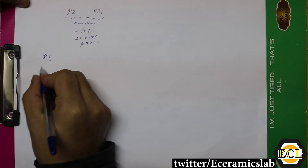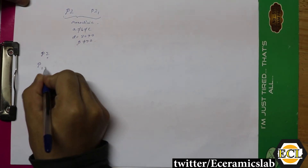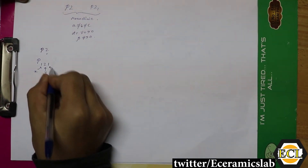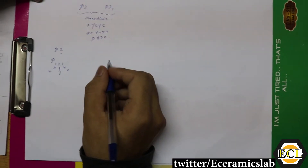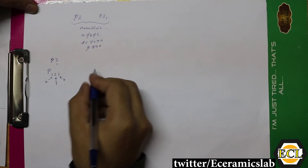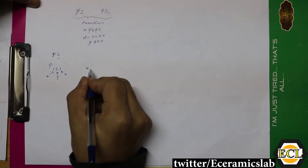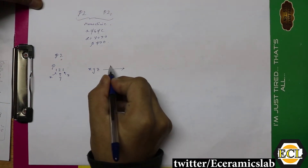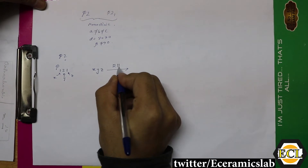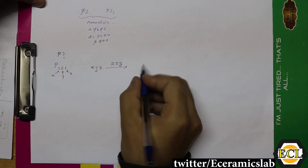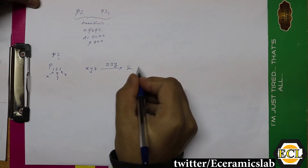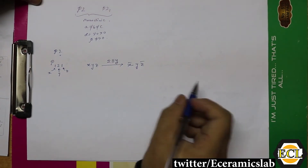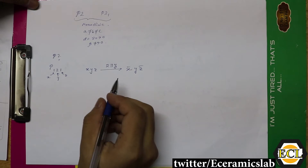For the P2 space group, we first determine the equivalent points. The space group presentation has the X axis, the Y axis, and the Z axis. We apply the two-fold symmetry element parallel to Y. Considering one point XYZ and applying the two-fold symmetry element parallel to Y, the resultant point is X̄ Y Z̄. So we get two equivalent points.